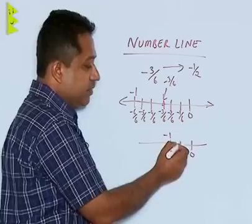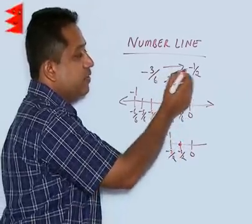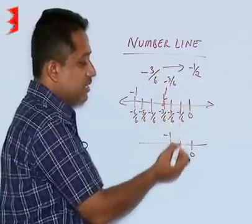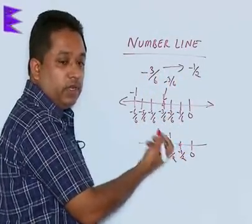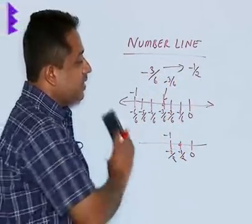So, we are going to divide into two portions and the first portion would have given you this equivalent value of minus 3 by 6, that is minus 1 by 2. Now, we can also consider some other example.